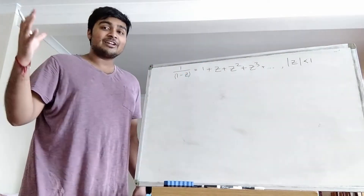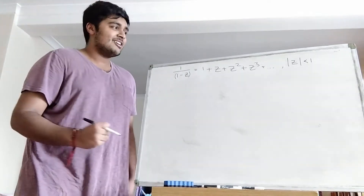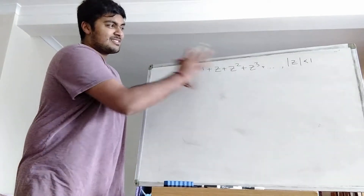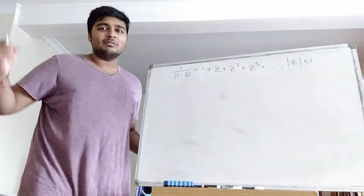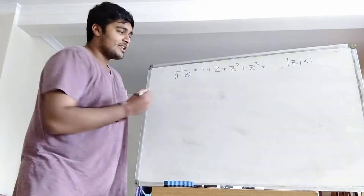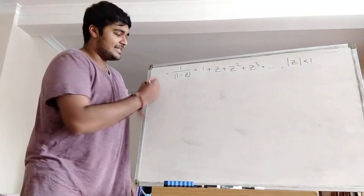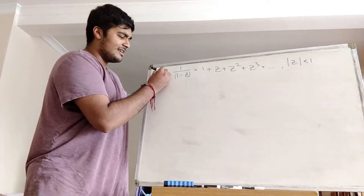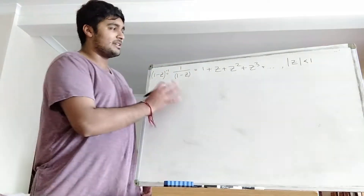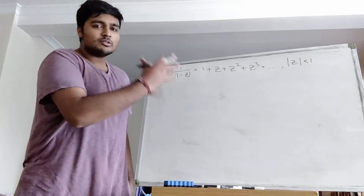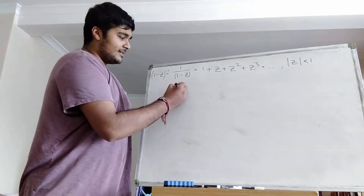But today I'm not going to be looking at complex numbers z — I'm going to be looking at when z is a matrix. So what does this thing hold for matrices? And obviously what is this right-hand side when we're adding up an infinite number of matrices? The left-hand side, 1 over 1 minus z, for complex numbers I can also write as 1 minus z inverse. And now I'm going to swap z for capital A, where capital A is a matrix.